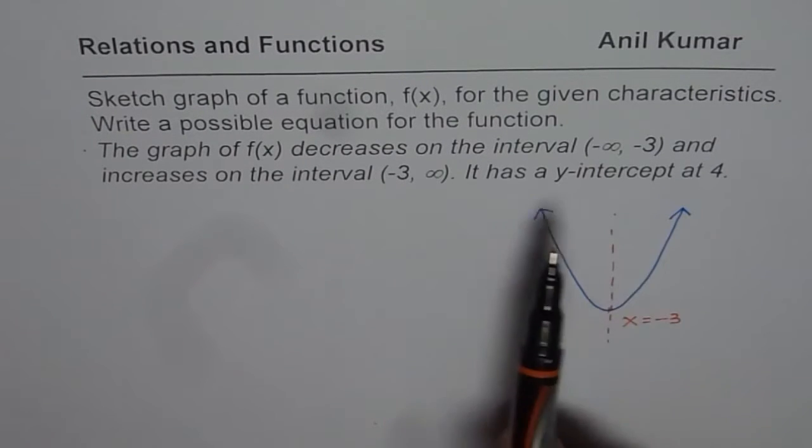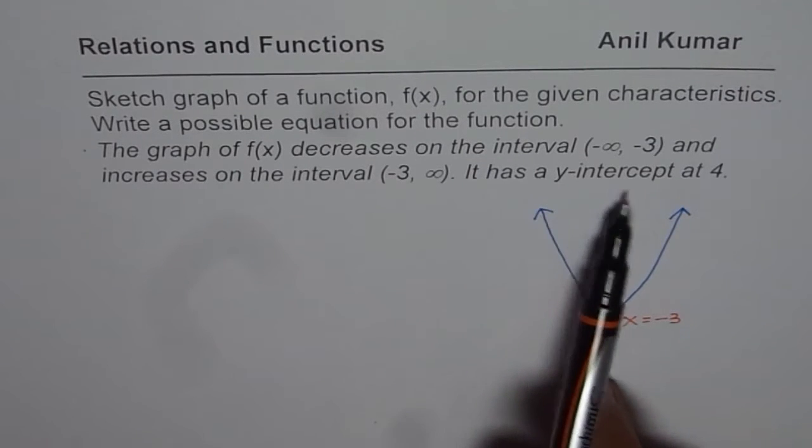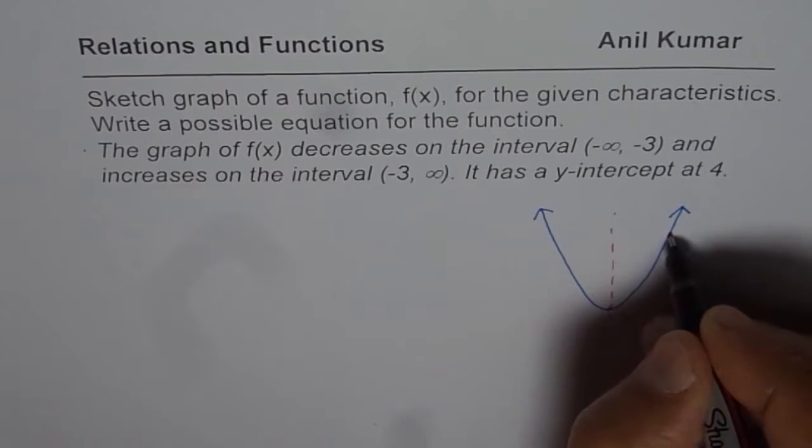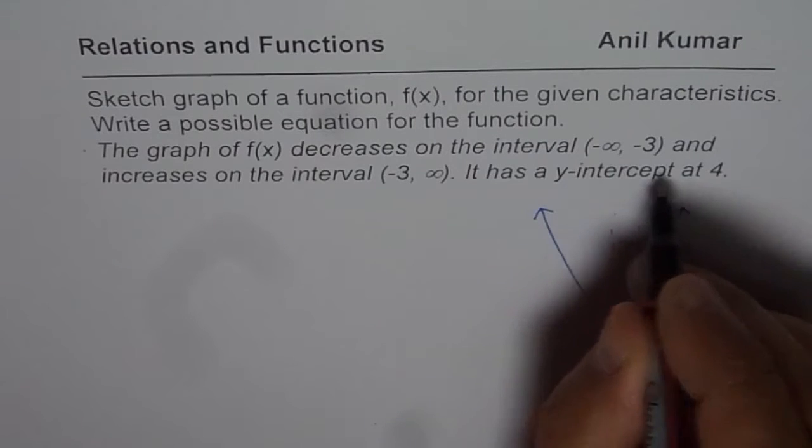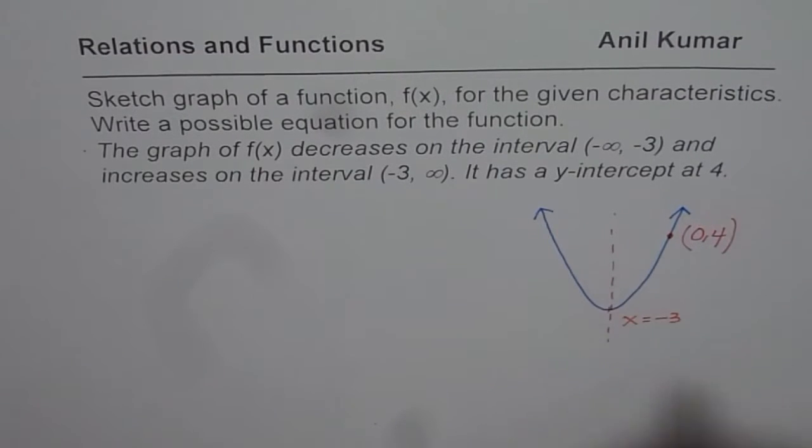Another thing which we know is given in the last statement which is it has a y-intercept of 4. Now 4 is much more than 3, so let us assume a point here. This point will be y-intercept, which means x is 0 and y value is 4. So that is how we get characteristics of our graph.